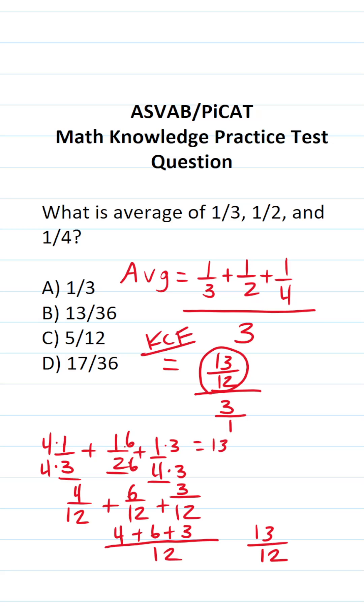So this becomes thirteen over twelve. We're going to change from division to multiplication. And then we're going to flip this bottom fraction. So instead of being three over one we're going to write it as one-third.